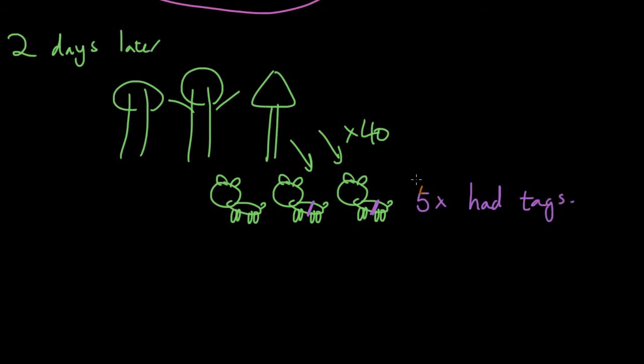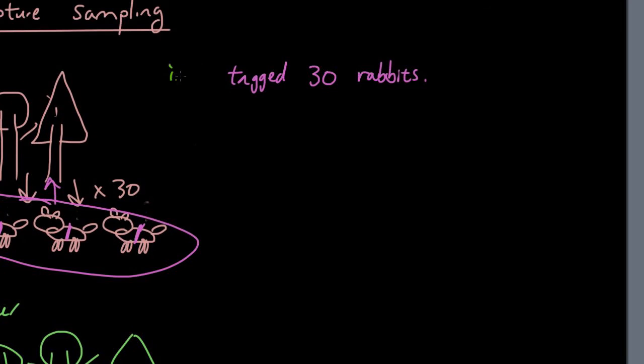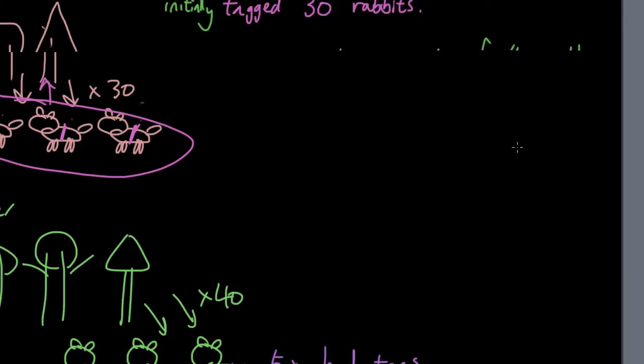So what is the percentage of the animals that you have captured that have tags? So then we write those things down. Initially we tagged 30 rabbits, and then upon recapture out of 40 rabbits, five were tagged.